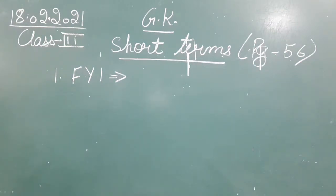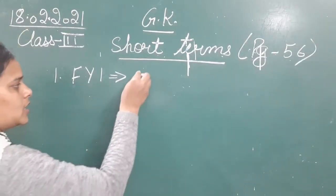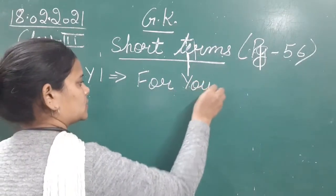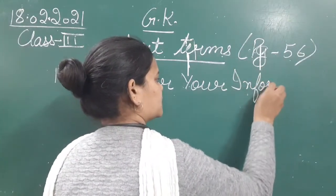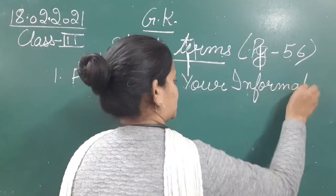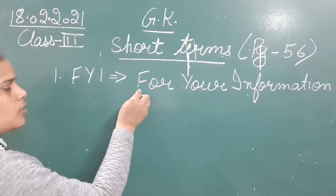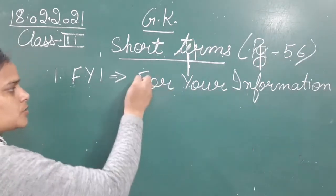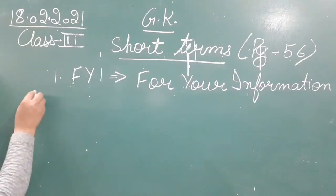F stands for 'for', Y stands for 'your', and I stands for 'information'. So the full form of F-Y-I is 'For Your Information'. Clear? Moving next to the second one.